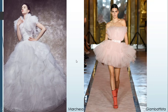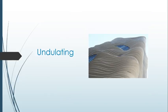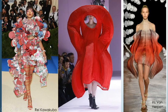Next we have the undulating silhouette — sort of like a wave coming in and out — used a lot because it mimics the way fabric flows and gives a sense of movement. Here we can see some very extreme examples: two from Rei Kawakubo, where the waving shapes of petals coming off the garment give that wavy movement and silhouette.